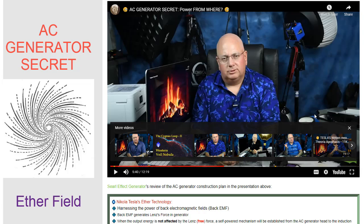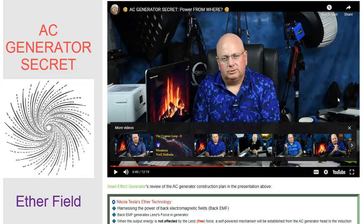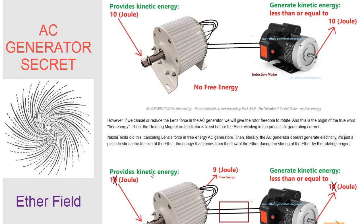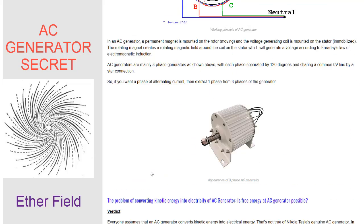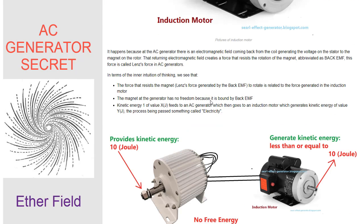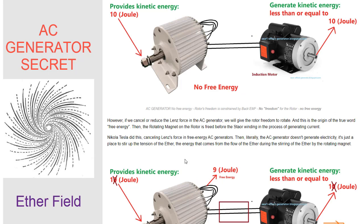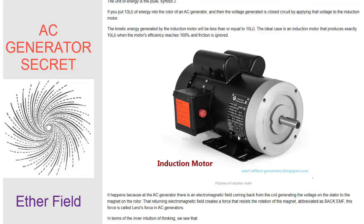The alternator does not generate electricity. It is just a place to manifest the energy from the ether after stirring the ether with a rotating magnet. The Tesla AC generator is a free energy device that uses the power of the ether to create electricity. The generator works by rotating a magnet in the ether, which stirs up the ether and creates electrical energy. The generator is not just a place to manifest the energy from the ether, but it is also a genuine Tesla technology.